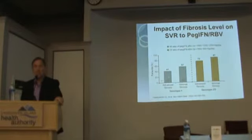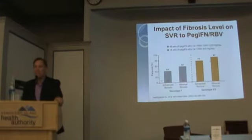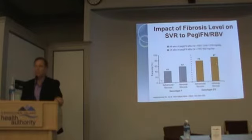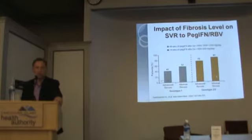Get treated earlier rather than later. Importantly, for genotype 2 and 3, the past, present, and future treatment are the same. There is no new specific treatment for genotype 2 and 3 — it's still interferon plus ribavirin — but you have an 80 to 90% chance of being cured. If you have genotype 2, I'm not sure what you're waiting for.